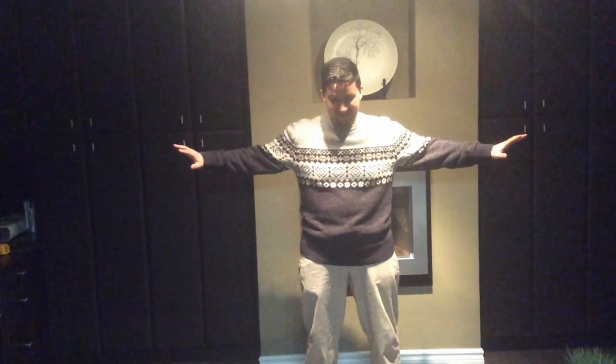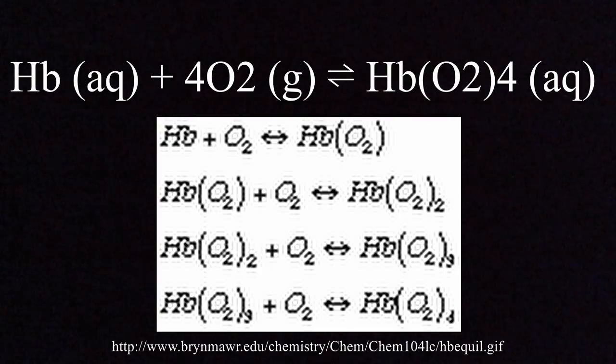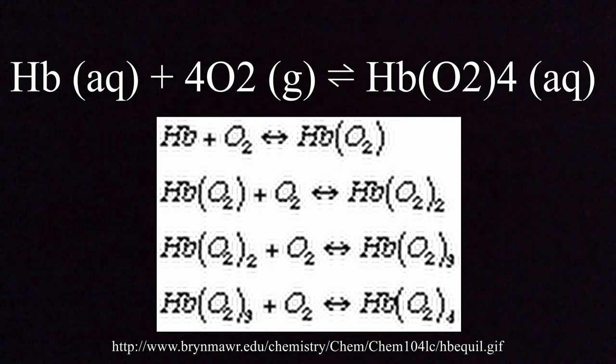How about you explain the process of oxygenation, Ahmed? The formation of oxyhemoglobin, or the oxidation of hemoglobin, is carried out through a reaction shown on the screen — a reversible four-step reaction mechanism in which each step bonds with oxygen to the heme in the hemoglobin.